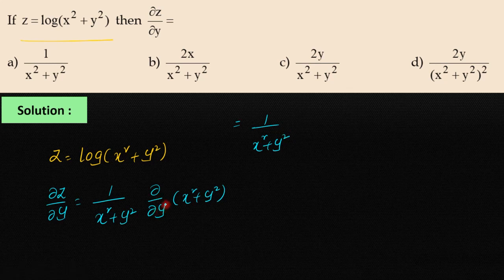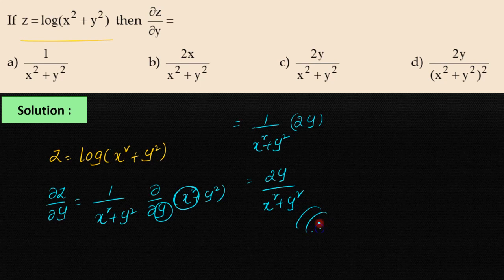Here, partially differentiating with respect to y: x² is constant so differentiation is 0, and differentiation of y² is 2y. This equals 2y/(x²+y²). Therefore, the answer is option C.